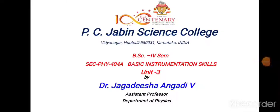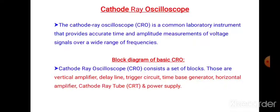Dear students, in this class we are going to discuss about basic instrumentation skills, that is skill enhancement course unit 3. Unit 3 consists of cathode ray oscilloscope, block diagram of cathode ray oscilloscope, construction and working of cathode ray tube, and some other topics. Now we will be discussing about cathode ray oscilloscope.